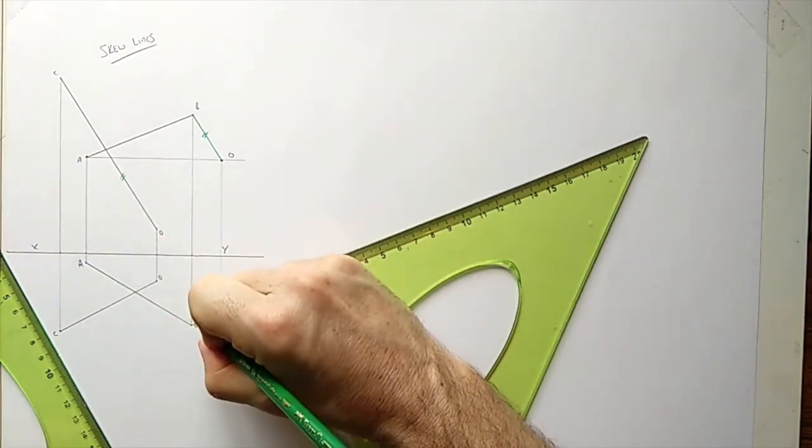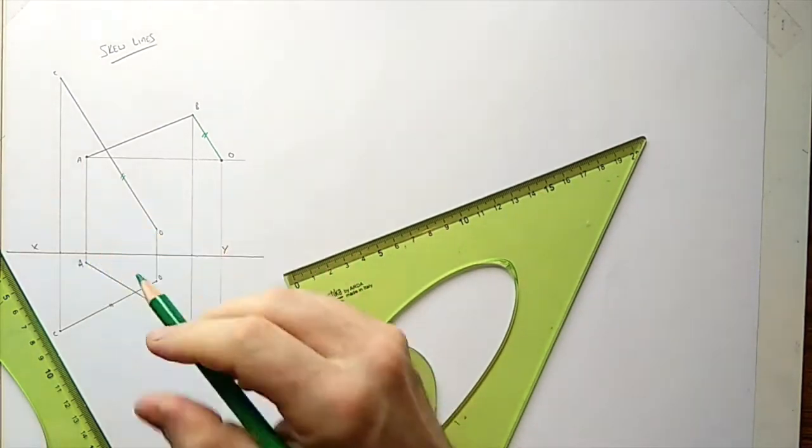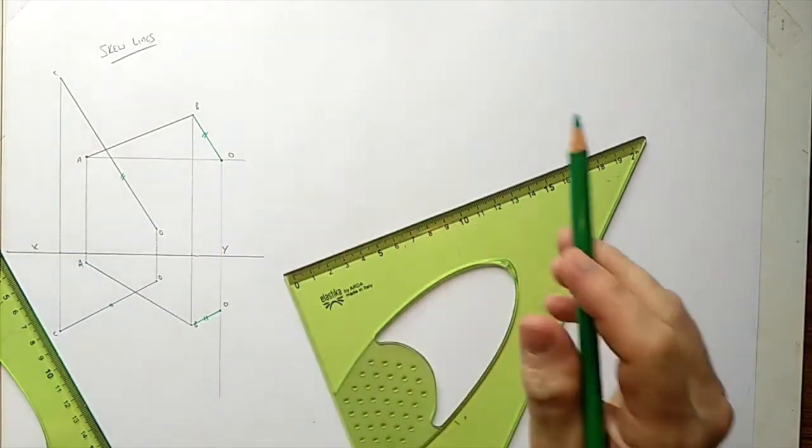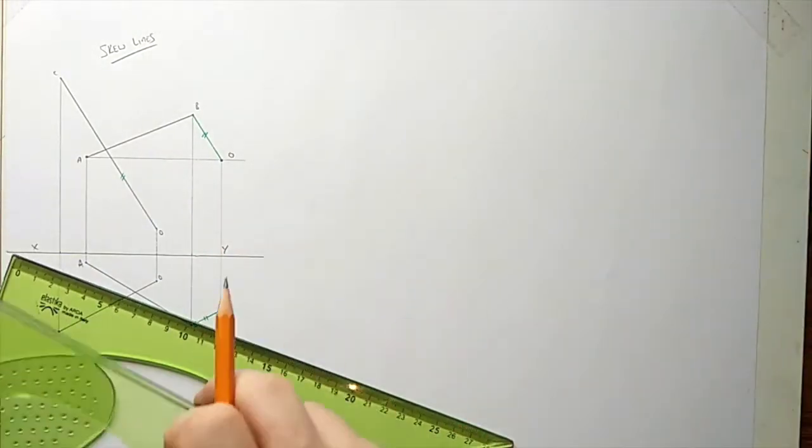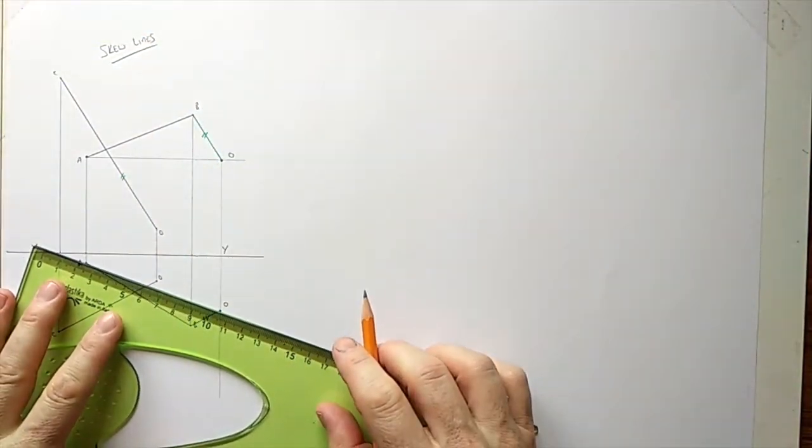Just a little reminder: BO and CD are parallel so they're parallel in all of our views. Now this brings us back to our line AO and this is a very useful one.